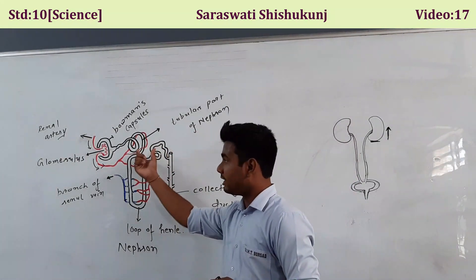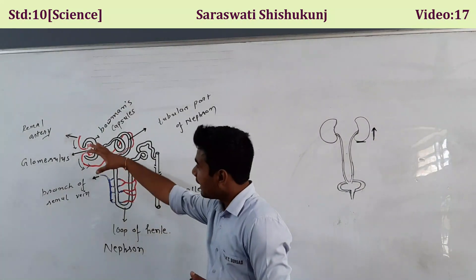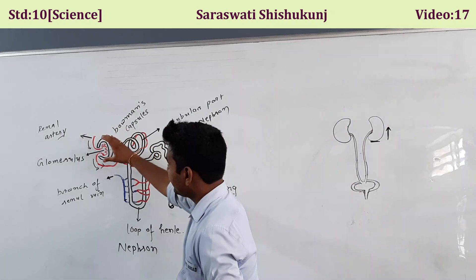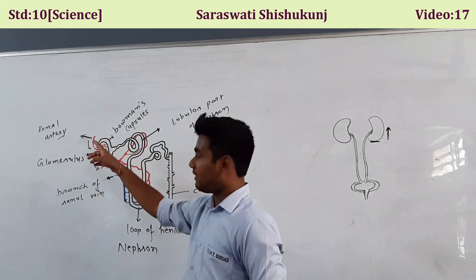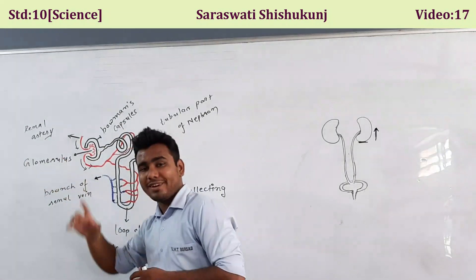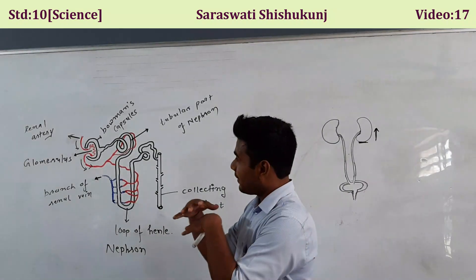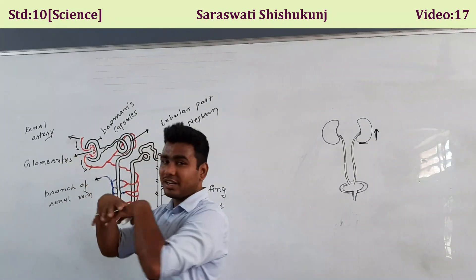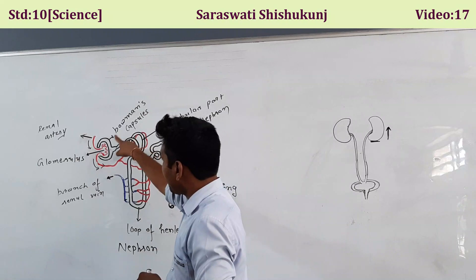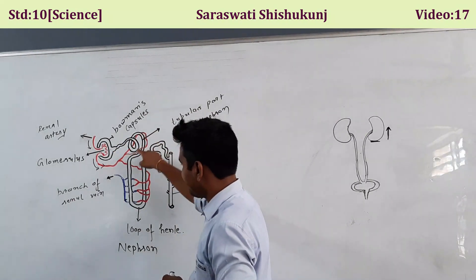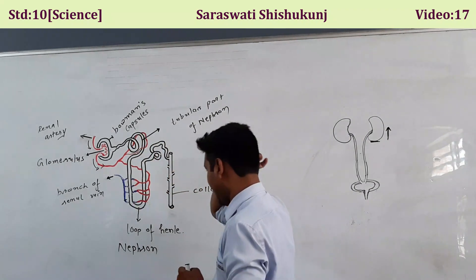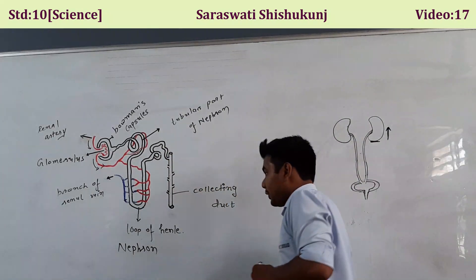In the kidneys there are millions of units known as nephrons. Looking at the structure of a nephron: it begins from the Bowman's capsule, which is a cup-shaped structure. Inside that cup-shaped Bowman's capsule there is a network of blood capillaries called the glomerulus. So glomerulus is a structure within the Bowman's capsule consisting of a complex network of blood capillaries.